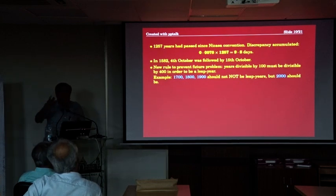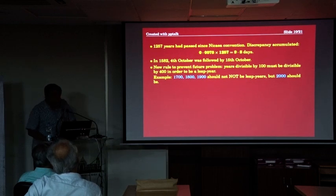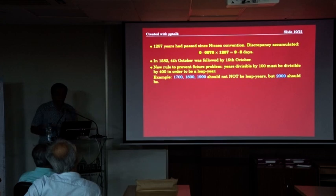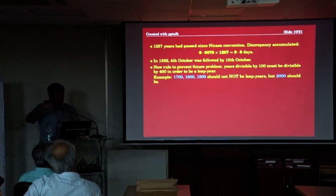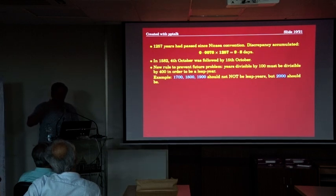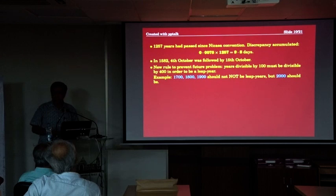Now there's a new rule to prevent future problems. The new rule is that if the year is divisible by 100, according to Julius's rule it should have been a leap year. But the new rule says: don't make it a leap year — let it pass another test. Check whether it's divisible by 400. If it is, make it a leap year; if not, don't.